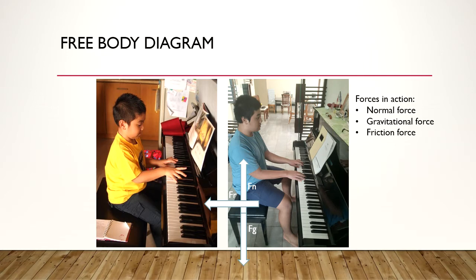First, we have free-body diagrams. Free-body diagrams are diagrams of two or more connecting objects that illustrate the forces that act upon those objects. In this case, the forces that are in action are normal force, which is the force that prevents an object from falling through the surface of another object; gravitational force, which is the force that pulls an object down; and friction force, the force generated by the surface of an object. In this picture, the gravitational force is pulling me down in my chair. However, the normal force of the surface of the chair is keeping me from falling through the surface of the chair.